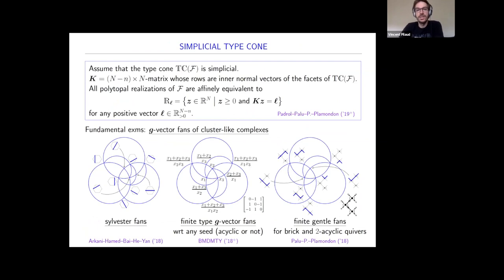Let me finish with a summary. If the type cone is simplicial, you have a very simple description of all polytopal realizations of your fan. There are three fundamental examples where the type cone is simplicial: on the left, the Sylvester fans, recovering the result of Arkani-Hamed, Bai, He, and Yan; in the middle, the finite type G-vector fans with respect to any seed, acyclic or not, recovering the result of Bazier-Matte, Douville, Mousavand, Thomas, and Yıldırım; and on the right, finite g-vector fans for brick-and-two acyclic quivers, giving new realizations of polytopes obtained with Yan, Pallu, and Pierre Guéber. Thank you very much.